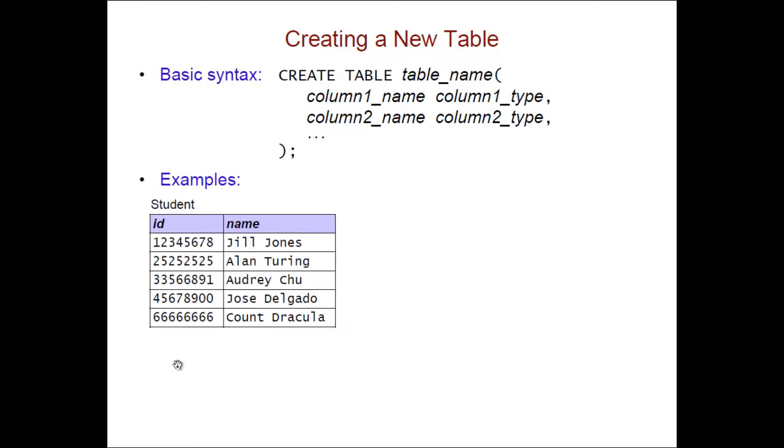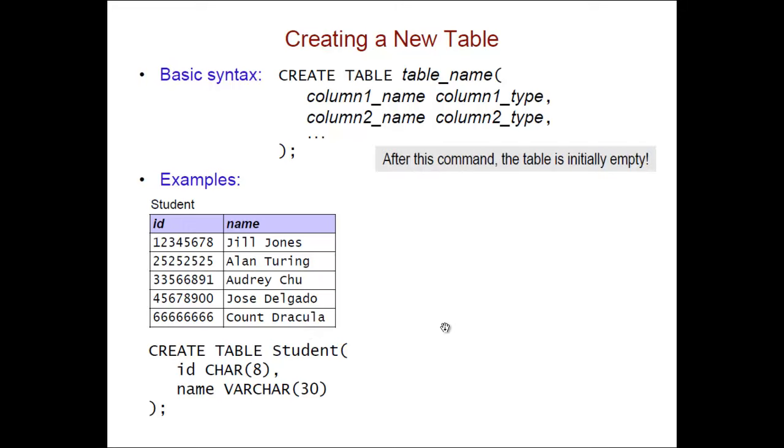To create our simplified student table we say CREATE TABLE Student, open parentheses, then the name of the first column and its type followed by a comma, name of the second column, its type, close parentheses, semicolon. Now it's important to note after this command is executed there's no actual data in there yet. The command creates an empty table that is then ready to have rows added to it.